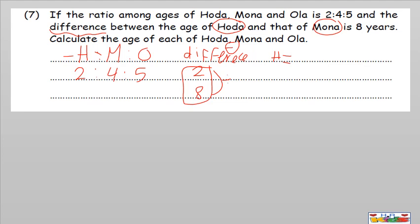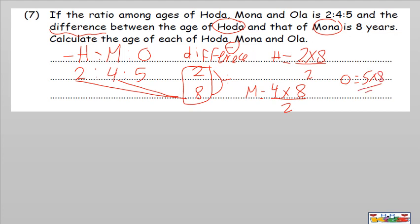The numbers are used for multiply and divide. So Hoda equals 2 by 8 divided by 2, Mona equals 4 by 8 divided by 2, Ula equals 5 by 8 divided by 2. So 8 divided by 2 equals 4: 4 by 2 equals 8, 4 by 4 equals 16, and 4 by 5 equals 20.